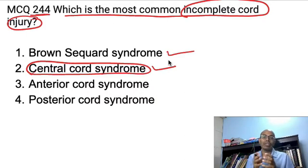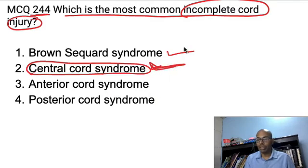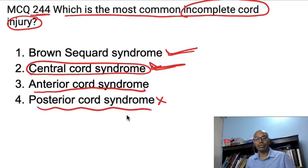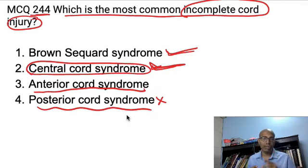Central cord syndrome involves the central portion of the spinal cord. It usually occurs in the cervical spine region in older patients who have a whiplash injury with pre-existing cervical spondylitis. The most common syndrome is central cord syndrome, followed by anterior cord syndrome, then Brown-Séquard syndrome. Posterior cord syndrome is very rare. The most common is central cord injury, not Brown-Séquard.